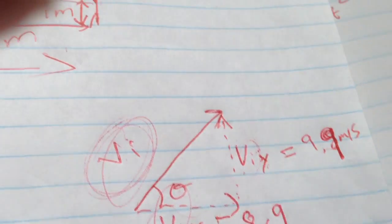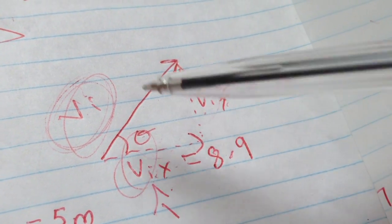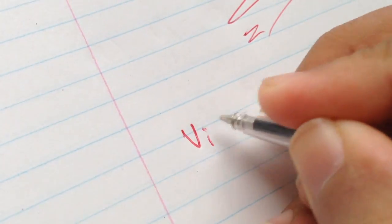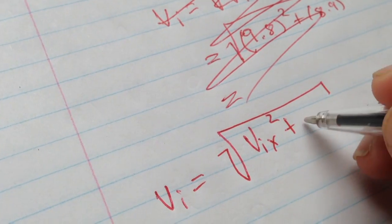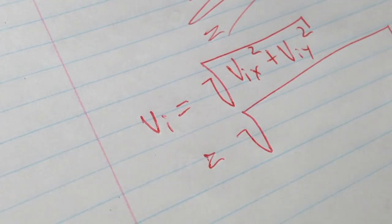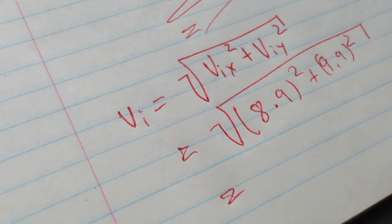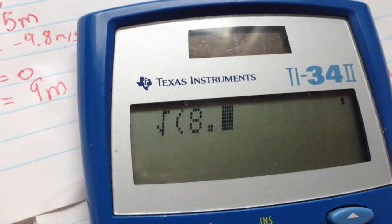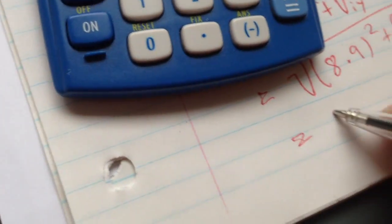Now we can find the total initial speed vi. We have vi_y = 9.9 m/s and vi_x = 8.9 m/s. Using vi = √(vi_x² + vi_y²) = √(8.9² + 9.9²) ≈ 13.3 m/s. That is the minimum initial speed required for the ball to clear the roof.